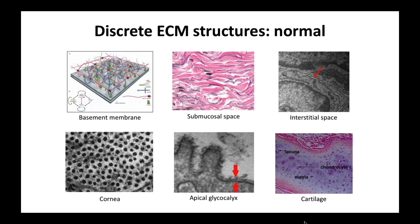This is a picture of collagen fibrils in the cornea. You can see a really beautiful regular array where the fibrils are all the same size. Certain mutations, mostly of small proteoglycans, lead to irregularity in both organization and size of these fibrils, and those corneas are not transparent. This gives you a sense of how critical matrix is to the cornea.